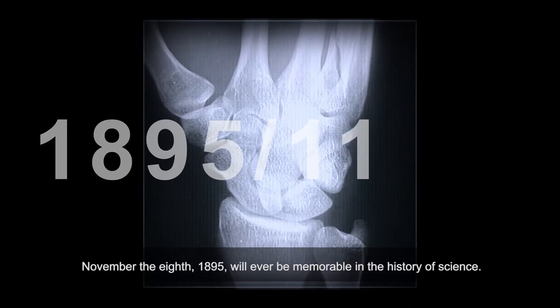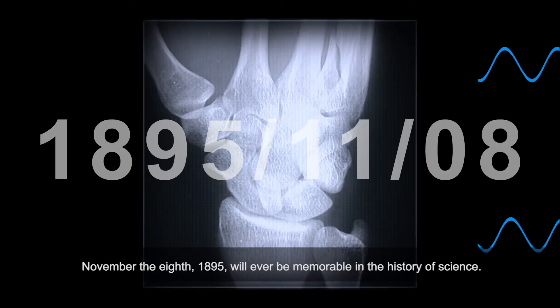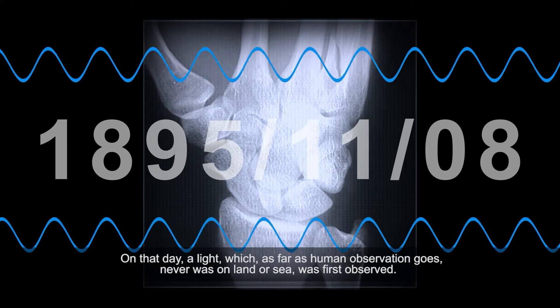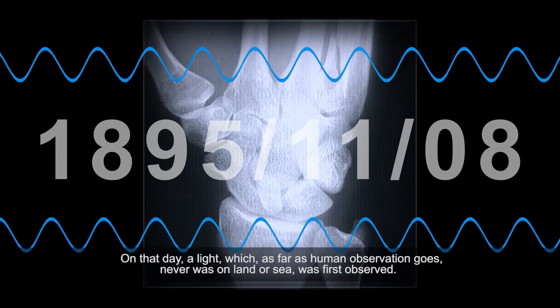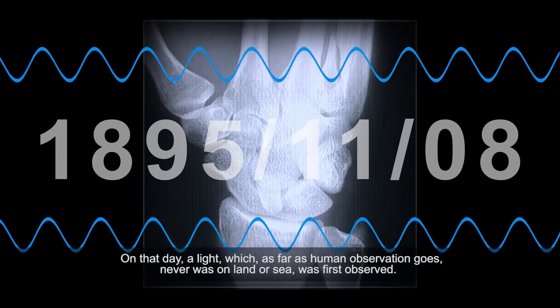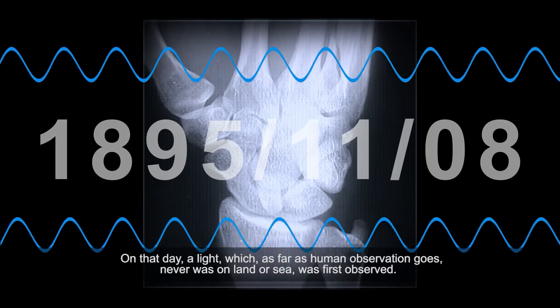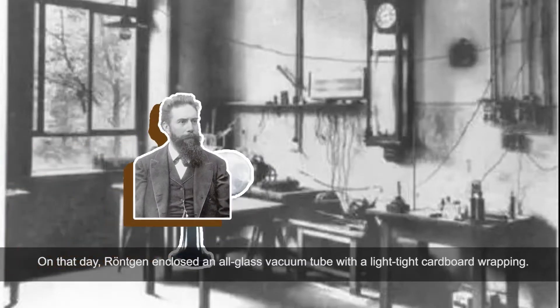November the 8th, 1895 will ever be memorable in the history of science. On that day, a light which, as far as human observation goes, never was on land or sea was first observed. On that day, Röntgen enclosed an all-glass vacuum tube with a light-tight cardboard wrapping.